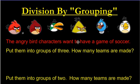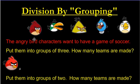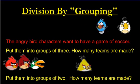The Angry Bird characters wanted to have a game of soccer. You can see by their soccer faces that they're very excited to get started. It says put them into groups of three. Here's what a group of three looks like — one, two, three. They're a group, they're a team. Another way of saying groups is teams. You could say put them into teams of three. Here's another team of three.